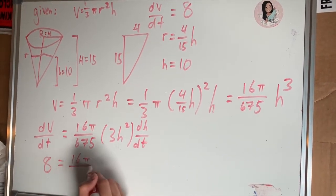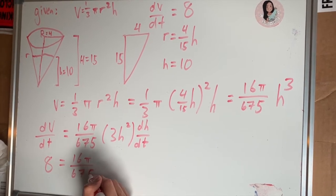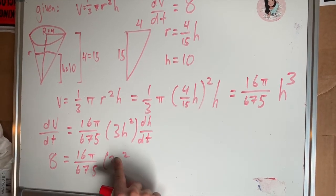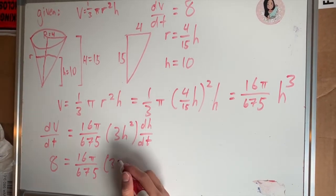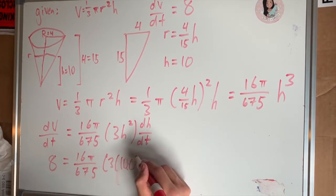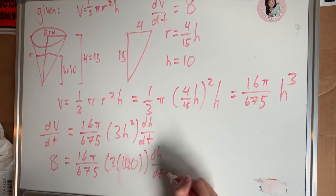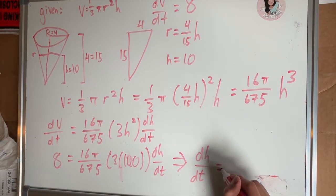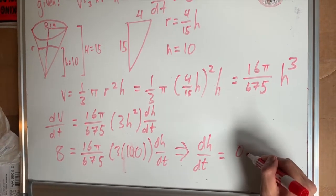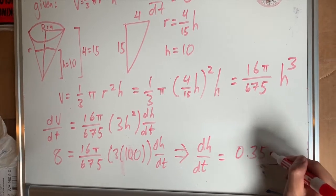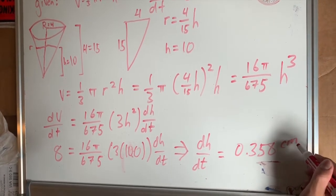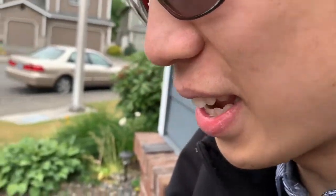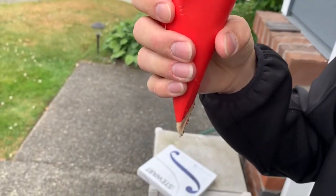So 8 equals (16π/675) times 3h squared, but we can substitute in the h. So that's 3 times 10 squared, which is 100, times dh/dt. Solving for dh/dt gives us dh/dt equals 0.358 centimeters per minute. The volume of the ice is depleting at 0.358 centimeters per minute.